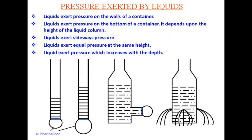There are activities you can perform to understand whether liquids exert pressure. First, liquids exert pressure on the walls of a container. Second, liquids exert pressure on the bottom of a container, which depends upon the height of the liquid column. Third, liquids exert sideways pressure on the walls of the container. Liquids also exert equal pressure at the same height. We can say liquid pressure increases with the depth of the container.